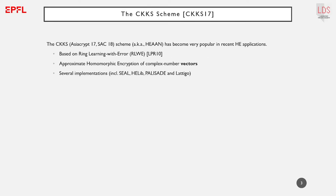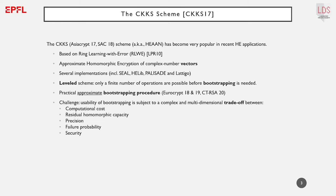The CKKS scheme is one such approximate homomorphic encryption scheme that has become very popular in applications. Based on ring learning with error, it encrypts vectors of floating point complex numbers and has been implemented in several libraries. It is a leveled scheme, which means that only a finite number of operations can be carried out before a bootstrapping procedure is needed to continue the evaluation. Such a bootstrapping procedure exists for CKKS, but it is not implemented in all libraries yet.